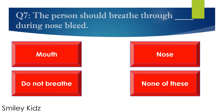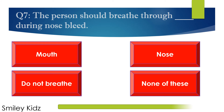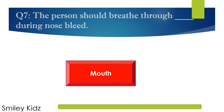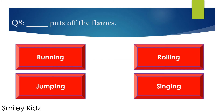Question number 7. The person should breathe through dash during a nosebleed. Options are A. Mouth, B. Nose, C. Do not breathe, and D. None of these. The right answer is mouth. The person should breathe through their mouth during a nosebleed.